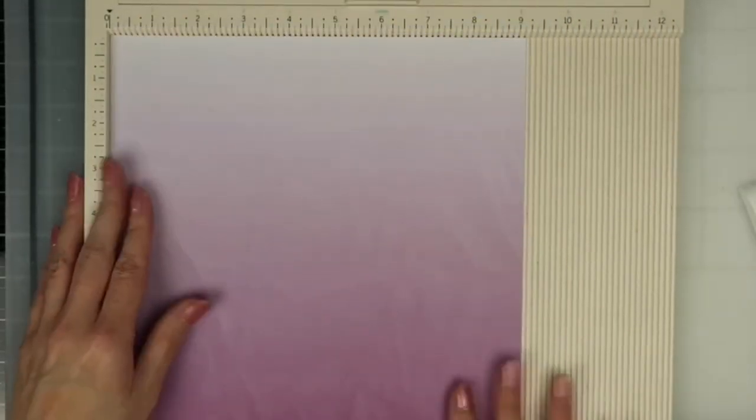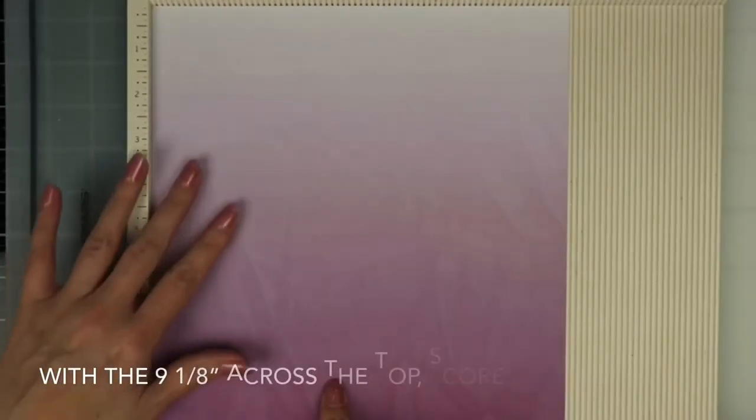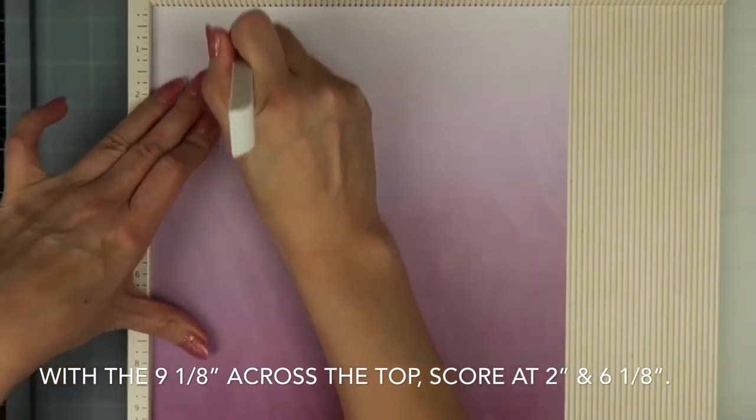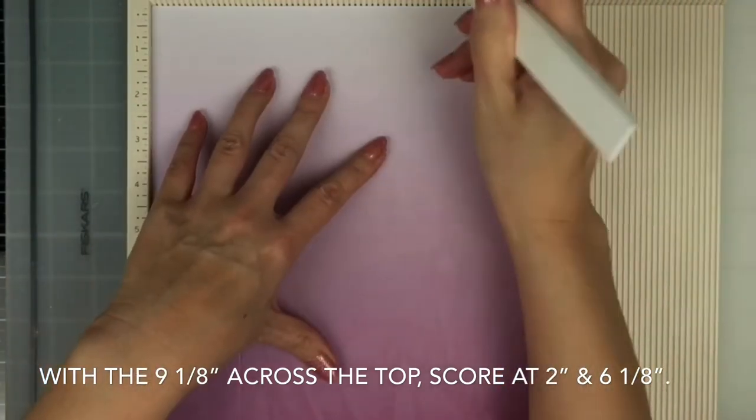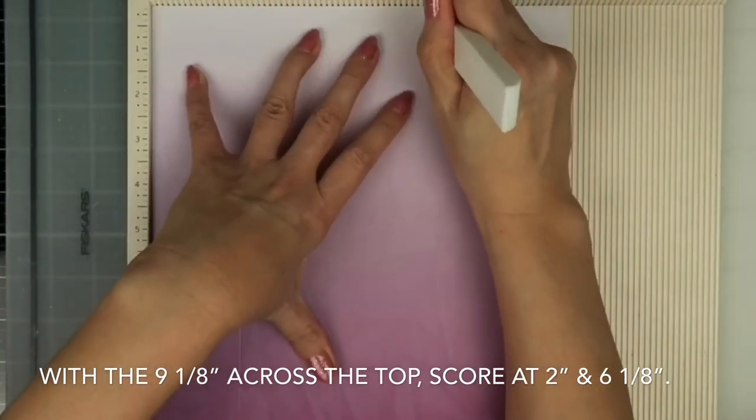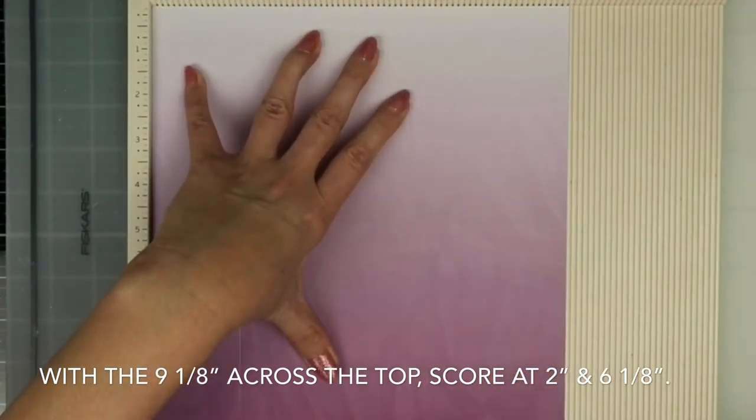Go ahead and grab your scoreboard and we'll place our cardstock piece with the nine and one eighths inch across the top and we will score this at six and one eighths inches. I do apologize that you can't see the measurements at the top. I did not realize it was off screen.